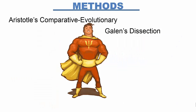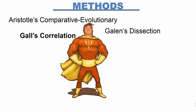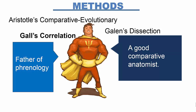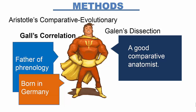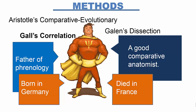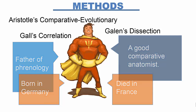Franz Gall's phrenology gives us a good example of correlation. He studied the bumps in the head and tried to match them with the mental abilities of people. He thought of the brain as a muscle that gets bigger the more it is used. As it gets bigger, it would push out on the skull, so if you map the topography of the skull, you'd know from the outside what was going on on the inside.